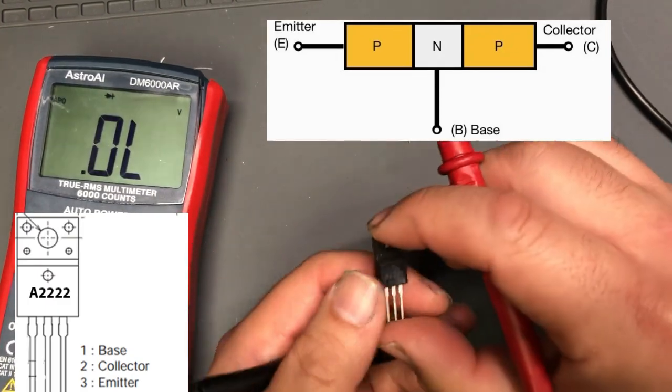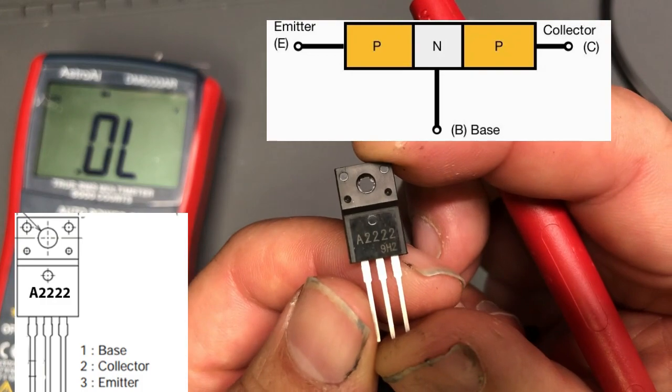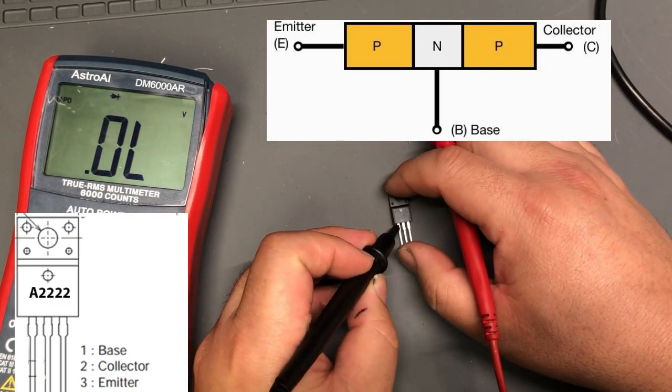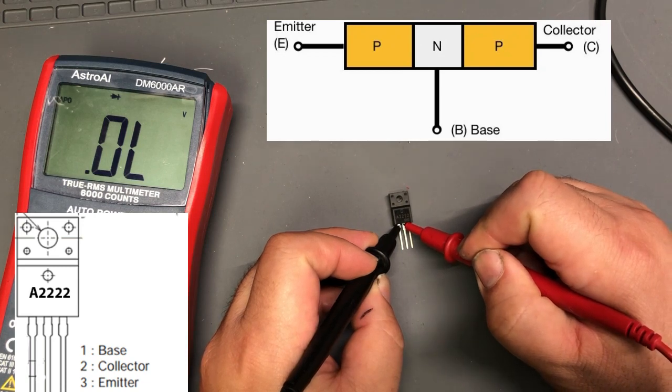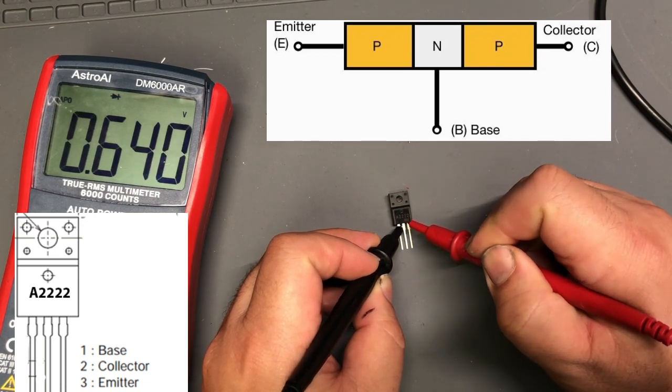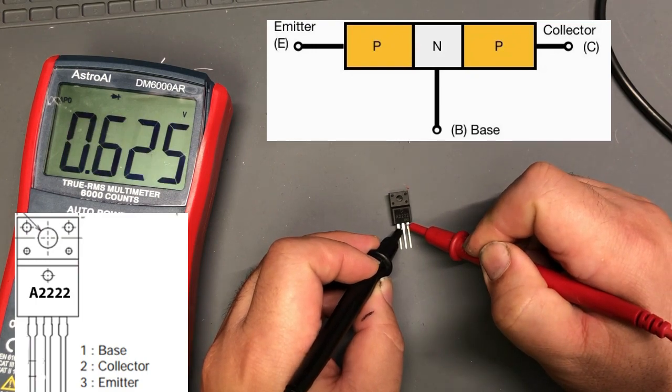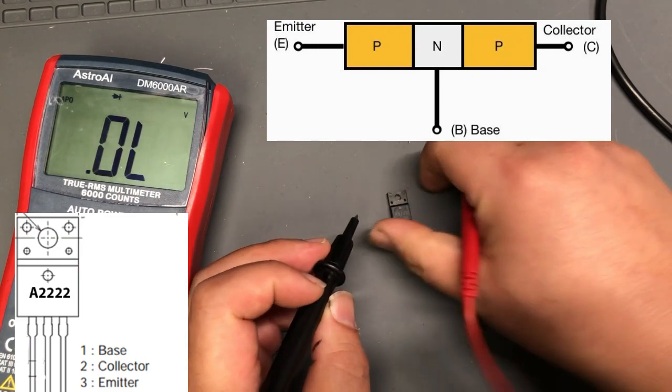A2222, you can see if we have the lighter side towards us, the leftmost pin is the base. We put black on it and then we get 0.6, and another one, 0.64.